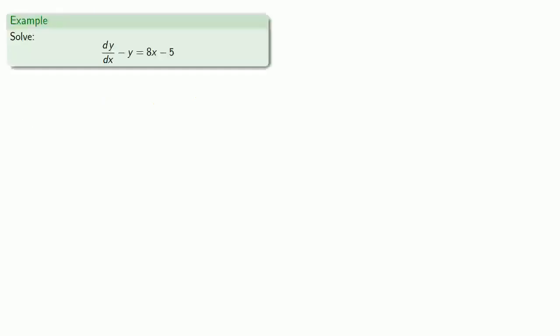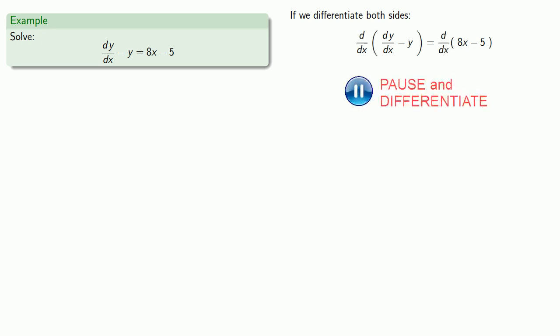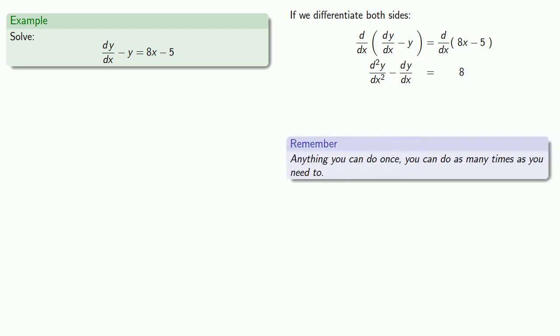For example, let's say I have the non-homogeneous first-order linear differential equation dy/dx minus y equals 8x minus 5. The thing to recognize here is if I differentiate both sides, we get rid of the x term. Of course, we still don't have a homogeneous equation because we still have this non-zero constant left, but a useful idea in life and mathematics is that anything you can do once, you can do as many times as you need to.